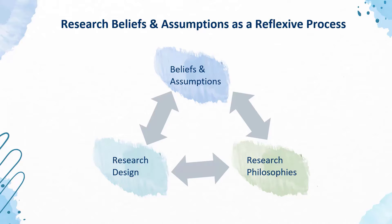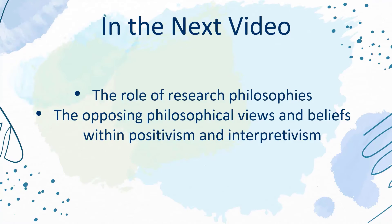What we find is that the beliefs and assumptions discussed in this video — in terms of ontology, epistemology and axiology — will influence the research philosophies which we select, but will also influence the research design, and these three things will all influence each other. This leads us to having to follow a reflexive process as a researcher, as if there is misalignment between these three things, issues can arise with the credibility of the research. In the next video we will consider the role of research philosophies and explore the opposing philosophical views and beliefs within positivism and interpretivism.